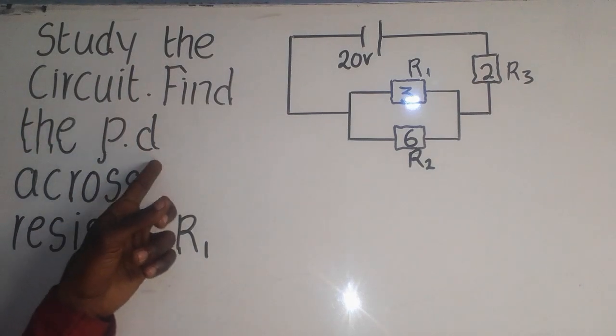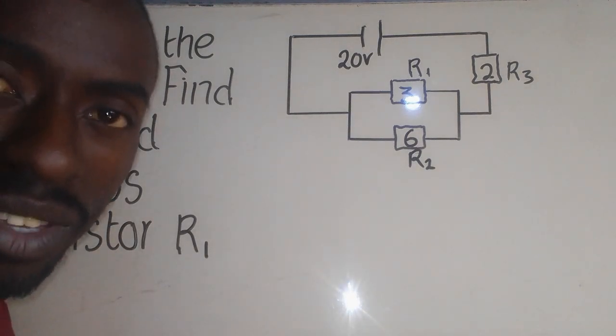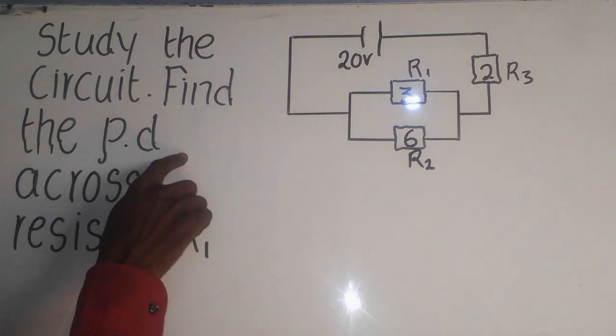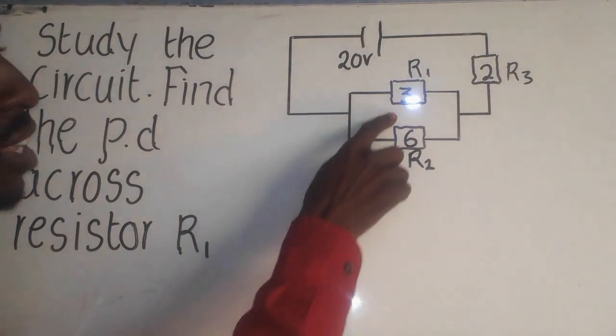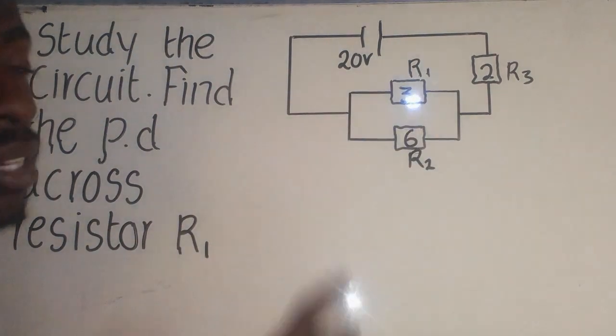When they say PD, it simply means potential difference which is just the other name for voltage, the driving force. Now, the question here says find the PD meaning the voltage across the resistor R1. They want us to find the voltage passing through this component here.